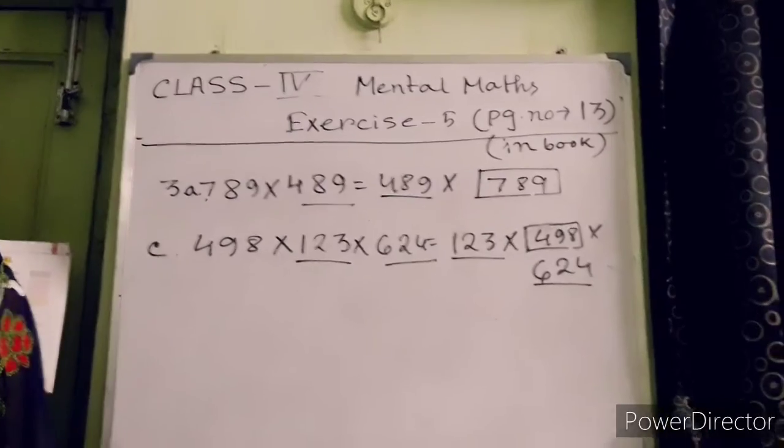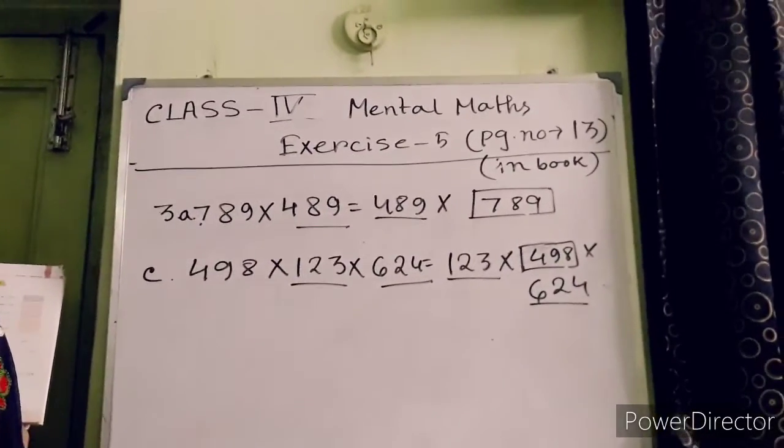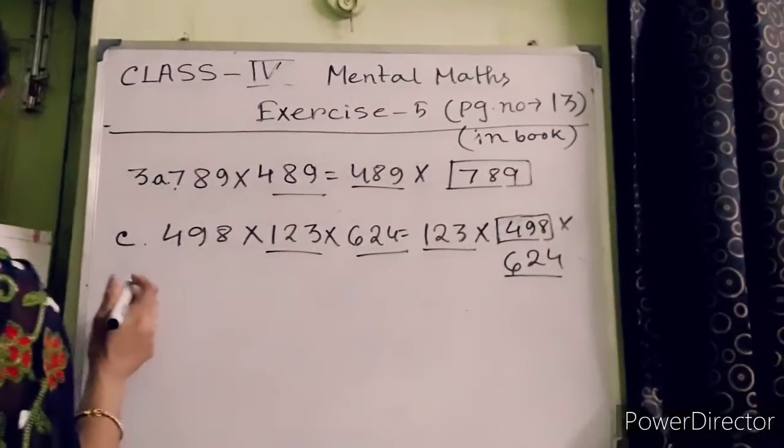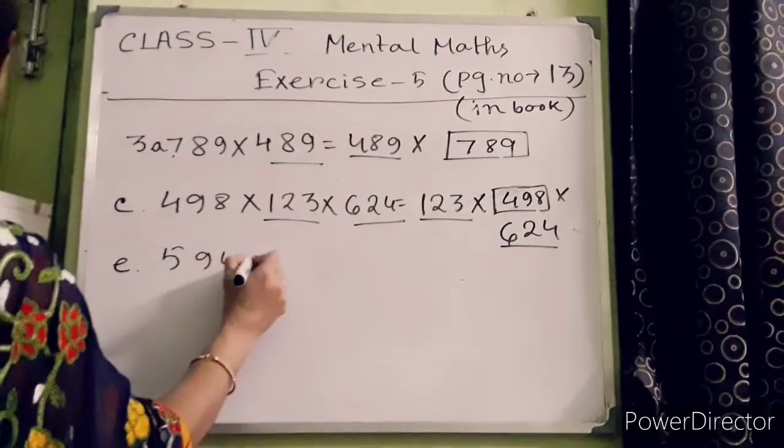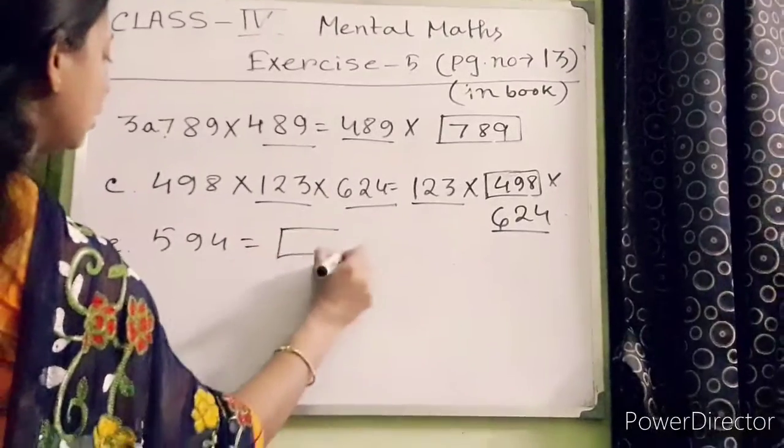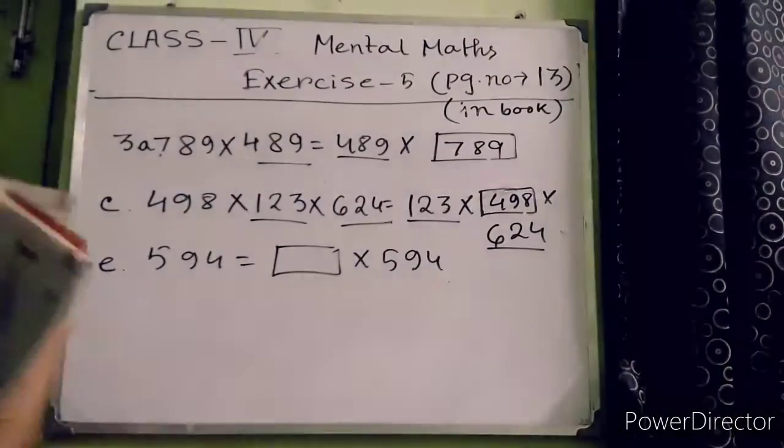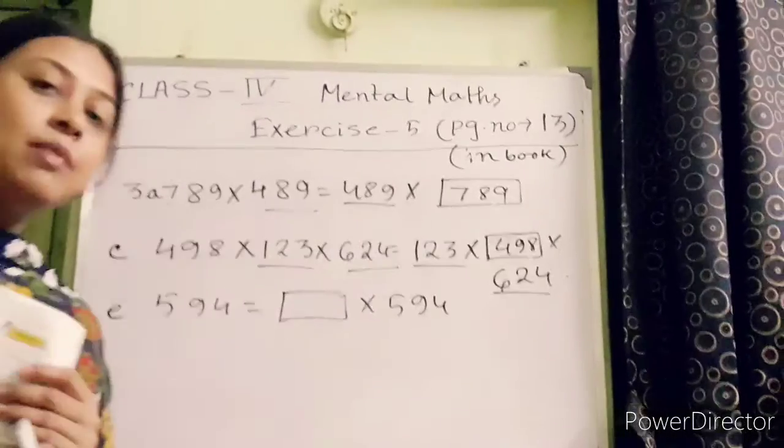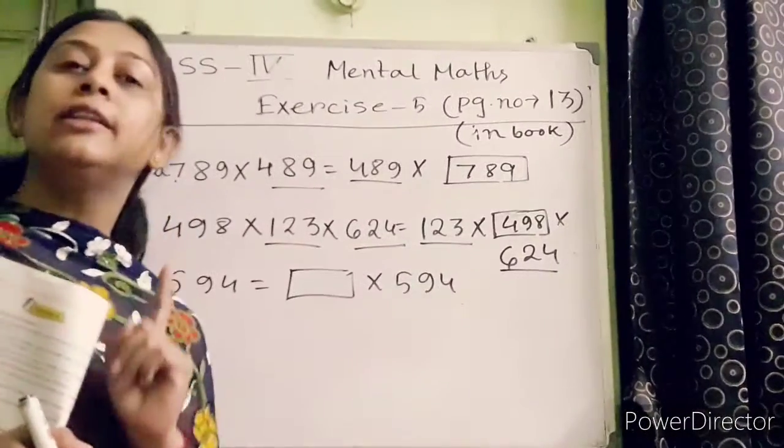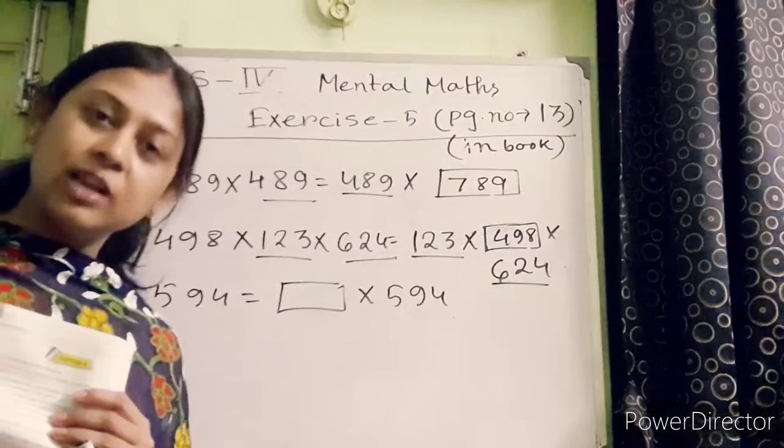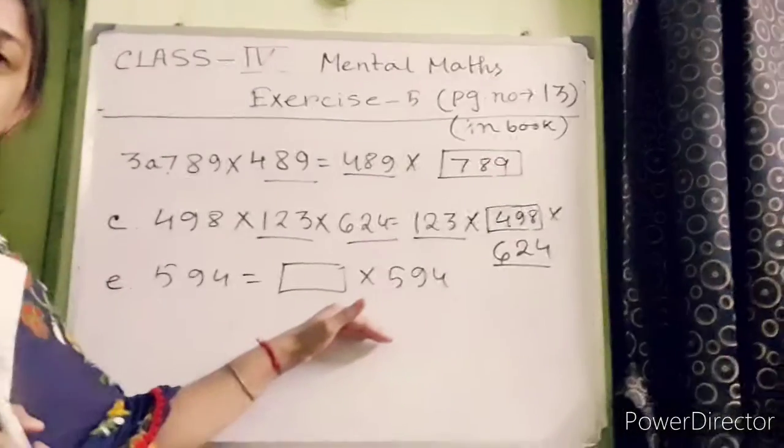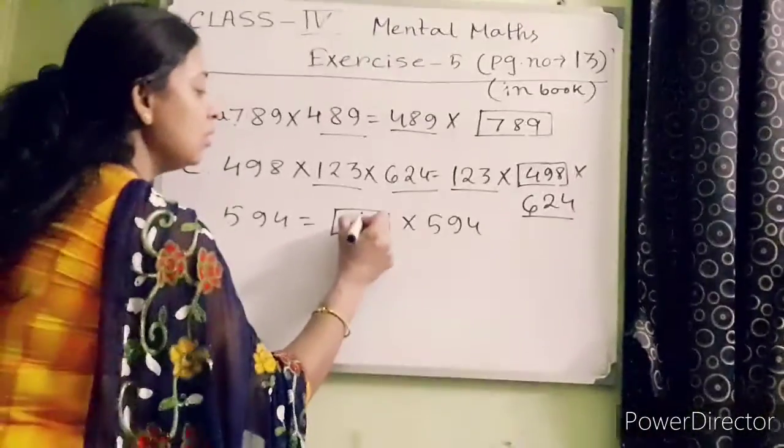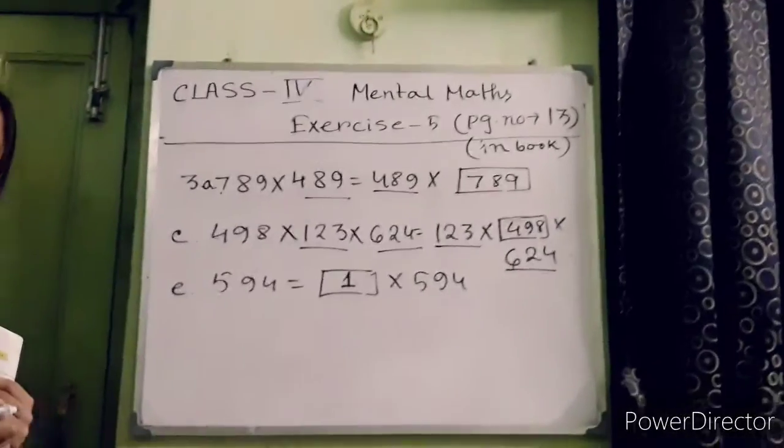Now, 594 equals blank into 594. Students, tell me, when you will get the same number or number itself? Can you tell me this one? When you multiply the number with 1, then you will get the same number. So you have to put 1 here.